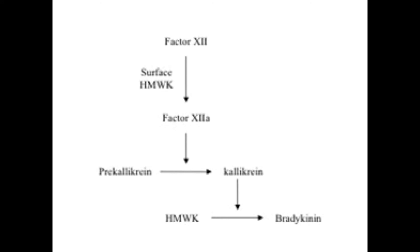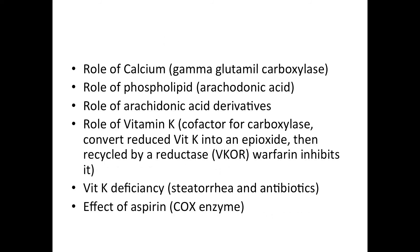In other words, if you want increased RAS — renin-angiotensin-aldosterone system — activity, you need to down-regulate the vasodilator bradykinin, and therefore ACE inhibits bradykinin. Regarding phospholipid: recall we formed arachidonic acid, which gives us thromboxane A2 and normally also prostacyclin to induce vasodilation and inhibition of platelet aggregation.